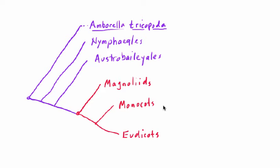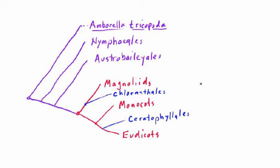The relationships among these three, as we see them at present, has the Magnoliids in the basal position — that is, splitting away before the common ancestor of the Monocots and Eudicots. The two minor lineages are the Chloranthales, which is kind of like a splinter group coming off before the Magnoliid radiation, and the Ceratophyllales, which are similarly a splinter group coming away from the Eudicot lineage without really being Eudicots themselves.